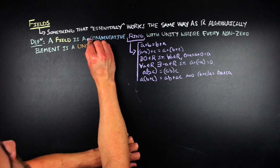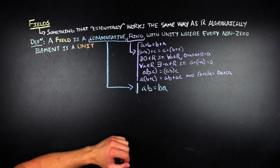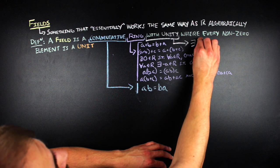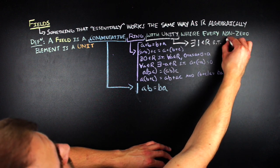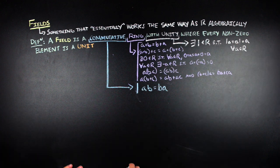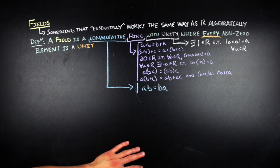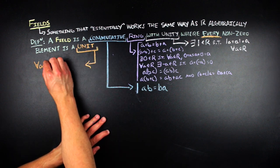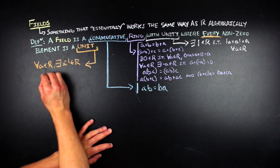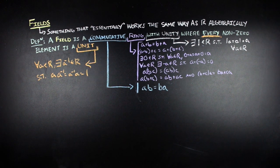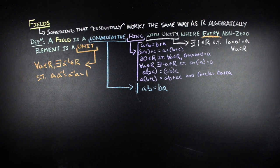That pulls in the first qualifier of a field — it's a commutative ring. So for a ring to be a commutative ring, multiplication also has to be commutative. A commutative ring alone doesn't guarantee a field, because if we want things to work like the real numbers, we also need a multiplicative identity — that's what 'with unity' means. If a ring is with unity, it has a multiplicative identity. The last part of the definition is that every non-zero element is a unit, similar to how all non-zero real numbers have multiplicative inverses. A unit is an element in the ring that has a multiplicative inverse getting you back to the multiplicative identity.